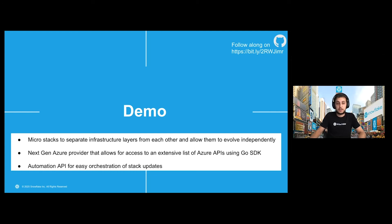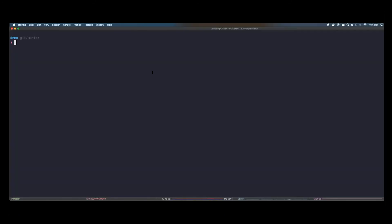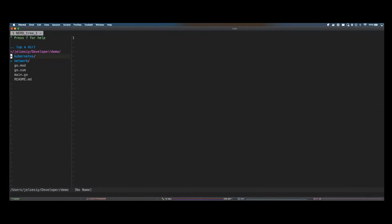What I'm about to show you is a setup that uses microstacks to separate infrastructure layers from each other so they can evolve independently, similar to the notion of microservices. We'll also be using the next-generation Azure provider that has access to a broad and extensive list of Azure APIs using the Go SDK. By using the automation API we are able to have an easy orchestration layer for stack updates across multiple stacks. We also make sure to use a custom secrets provider to keep our state secure using our own provider key. We have two projects: network and Kubernetes. Network provides a shared layer of networking resources that are going to be used by Kubernetes.